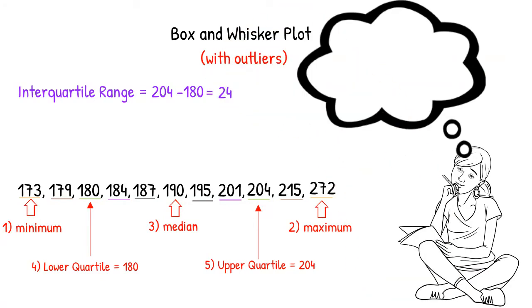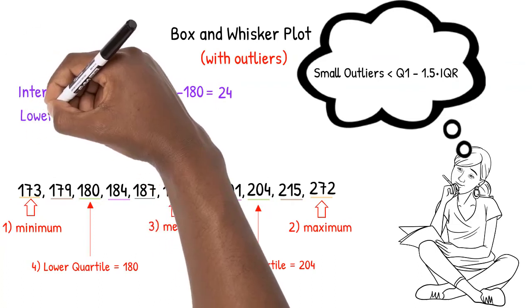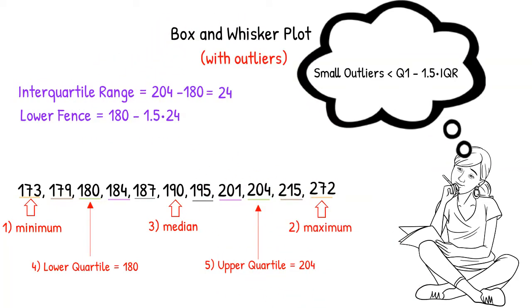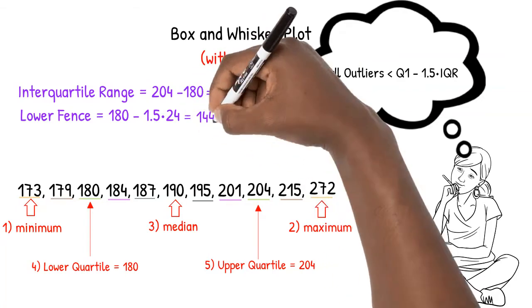In a previous video, we learned that small outliers are less than the lower quartile minus 1.5 times the interquartile range. This will create a lower fence that we will need for our display. The lower fence is equal to 180 minus 1.5 times the interquartile range, 24. The lower fence is 144.